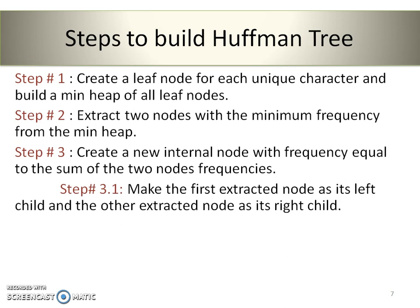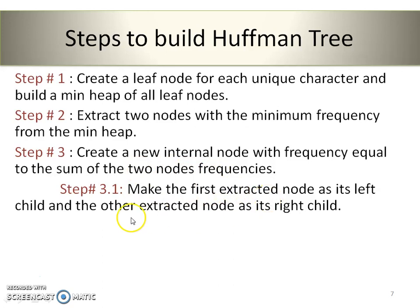Step 3.1 substep: Make the first extracted node its left child and the other extracted node its right child. Here we are building a Huffman tree for the given set of characters with respect to their frequencies, making a tree by adding internal nodes following the rule that they should be in sequence of minimum frequencies and we perform addition on those minimum frequencies.